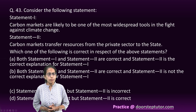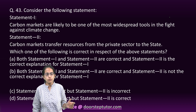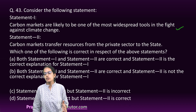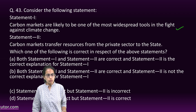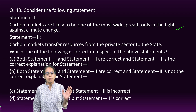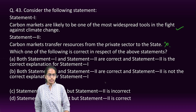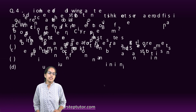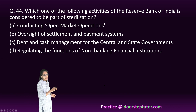On carbon markets: Carbon markets are likely to be one of the most important tools to fight climate change — correct, because they are designed to reduce global greenhouse gas emissions. However, they are not transferred from private to the state. So Statement 1 is correct and Statement 2 is incorrect.